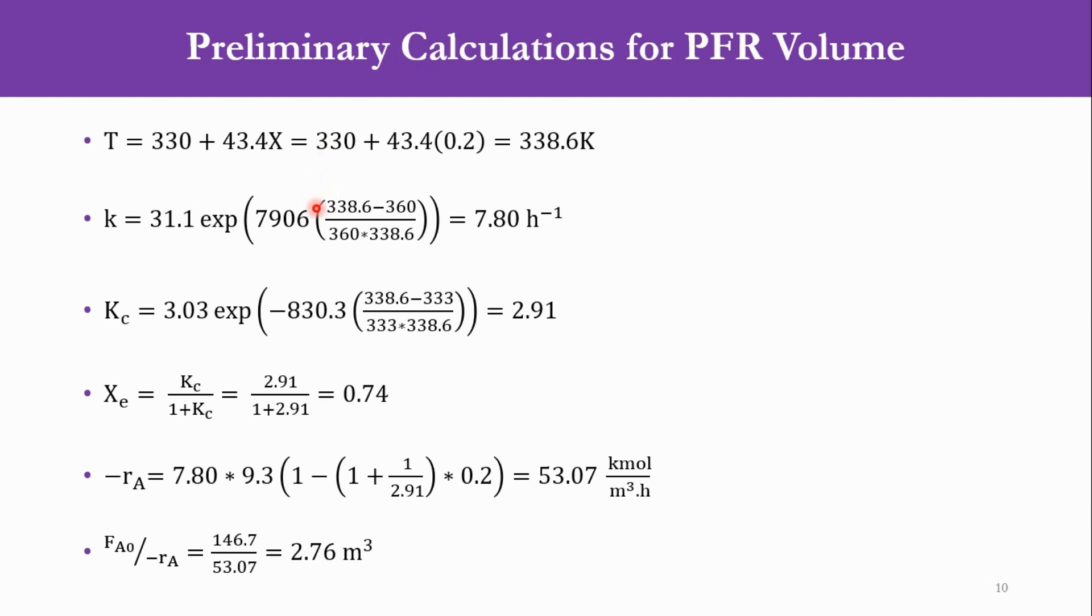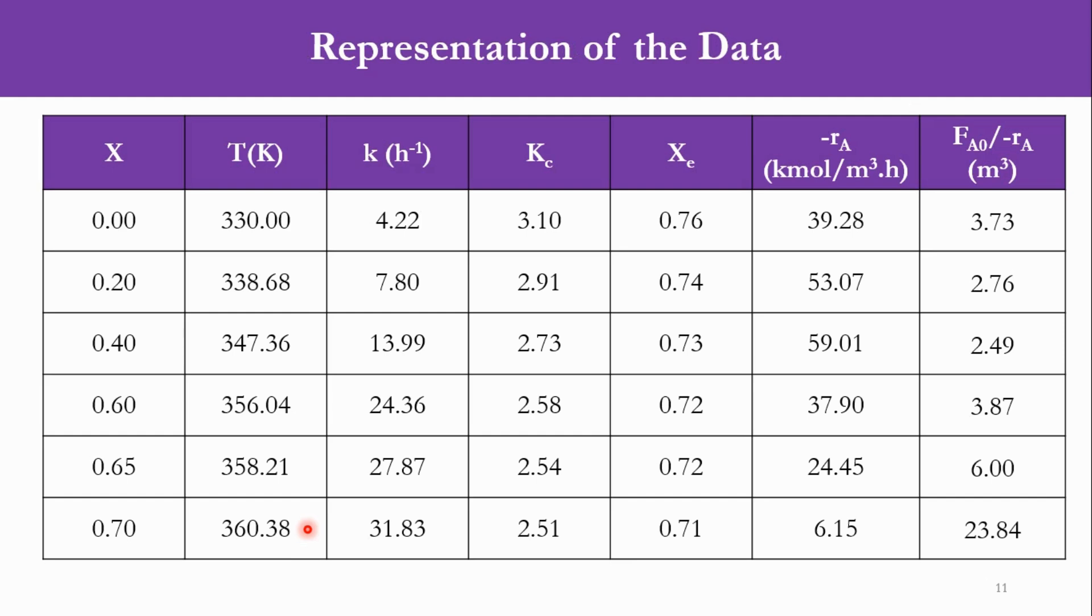Now this is calculation for one value which is X equals 0.2. If you repeat it for the other values, you can get this table for each value of X: 0.2, 0.4, 0.6, 0.65, and 0.7, and you can get at each point the value of temperature K, Kc, Xe, -rA, and FA0 over -rA.